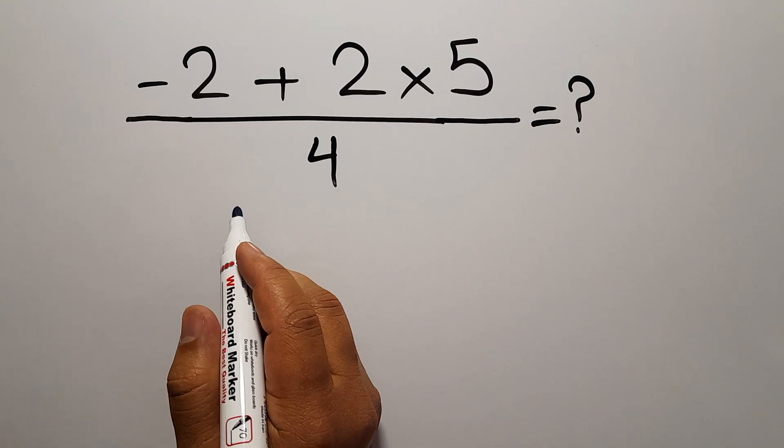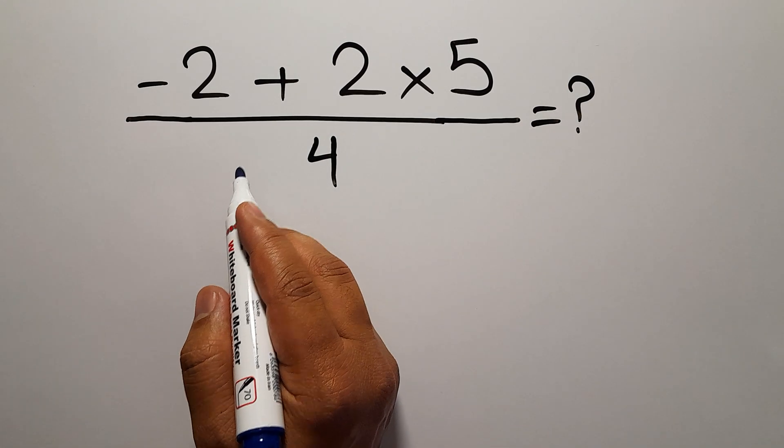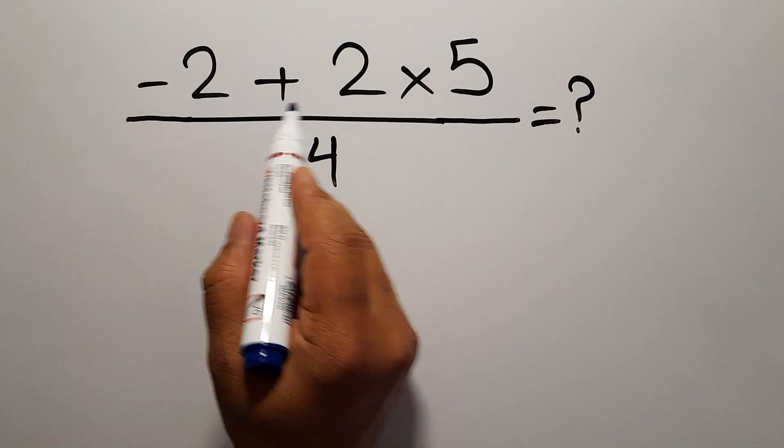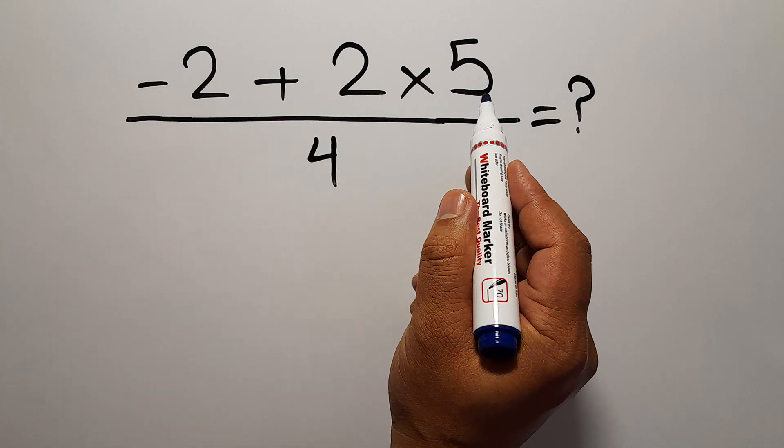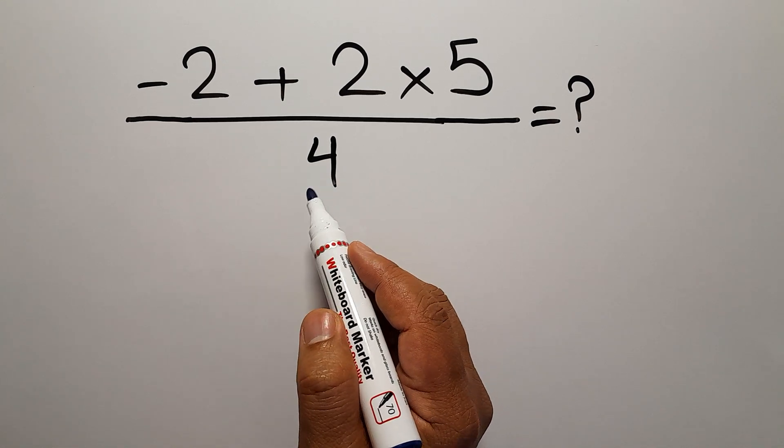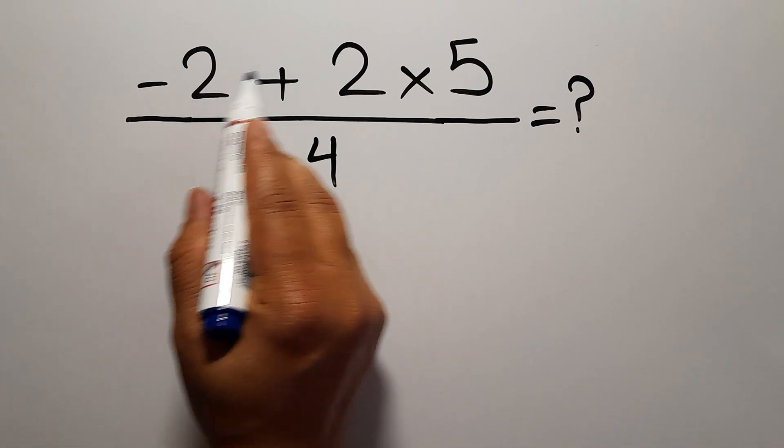Hey guys, welcome to MathJoy. In this video we want to find the value of this fraction: negative 2 plus 2 times 5, over 4. Are you ready to solve? Let's go.